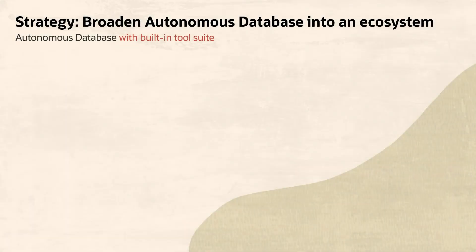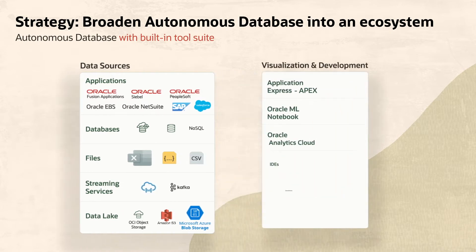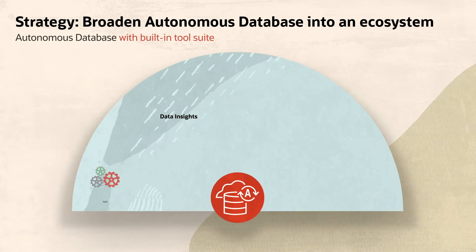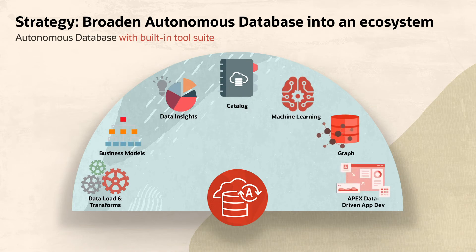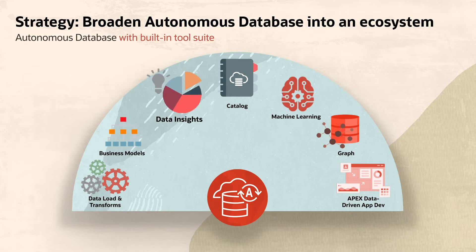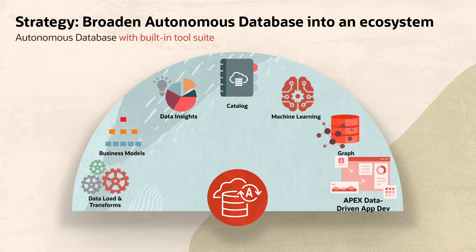We know you've got a plethora of data sources to wrangle — apps, databases, files and more — and a vast array of things you want to do with all that data. We know that you expect more than a flashing SQL prompt to do it all with, and the Autonomous Database tools include everything you need and nothing you don't. There are tools for data load and transformation, business modelling to make sense of all that data, insights so you don't need to go looking for a needle in a haystack. There's a catalogue too, and tools for ML, Graph, and of course SQL Developer Web, and Apex for low-code application development.